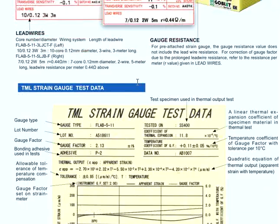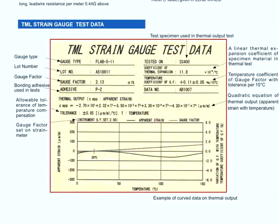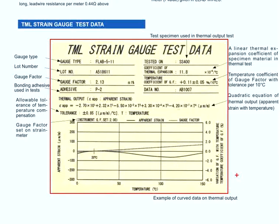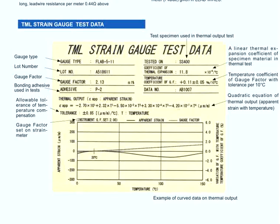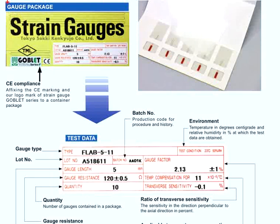Next, we look at the data sheet for the TML stringage. In every packet, there will be a piece of paper providing the test data for the relevant strain gauge. The information here should be in line with the information given on the package.